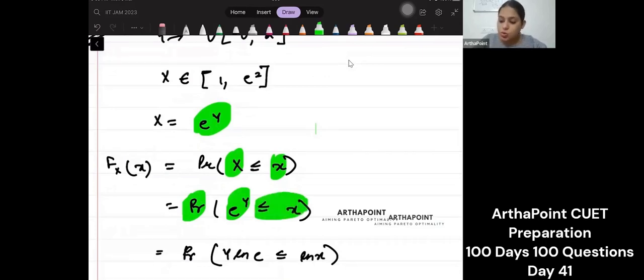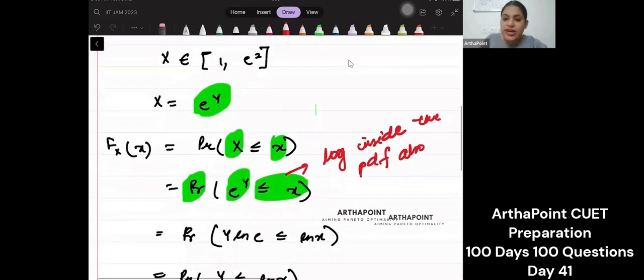Now this is very important that some people get confused. You can please write this down. You can take log inside the probability density function also. That means inside PDF also, inside probability also. So what I have done is inside this only while solving this part I have taken log on both sides.